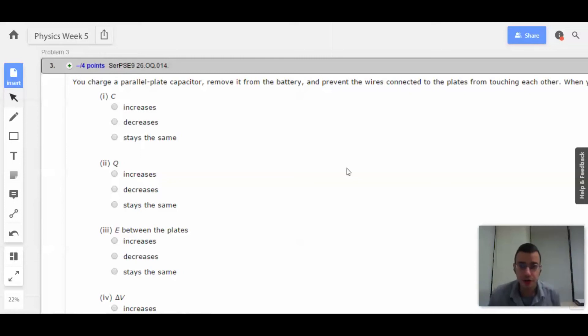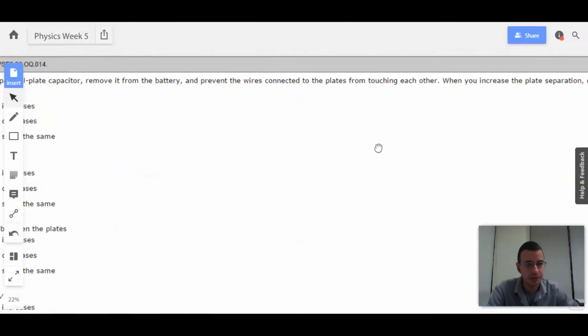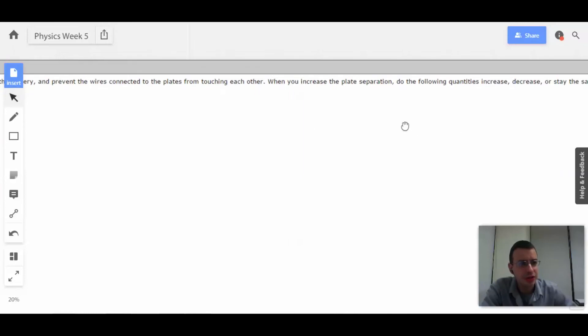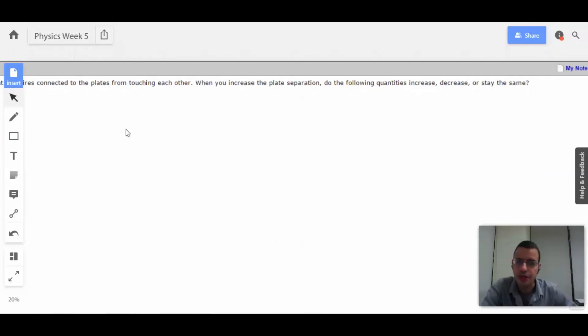Problem 3. You charge a parallel plate capacitor, remove it from the battery, and prevent the wires connected to the plates from touching each other. When you increase the plate separation, do the following quantities increase, decrease, or stay the same?